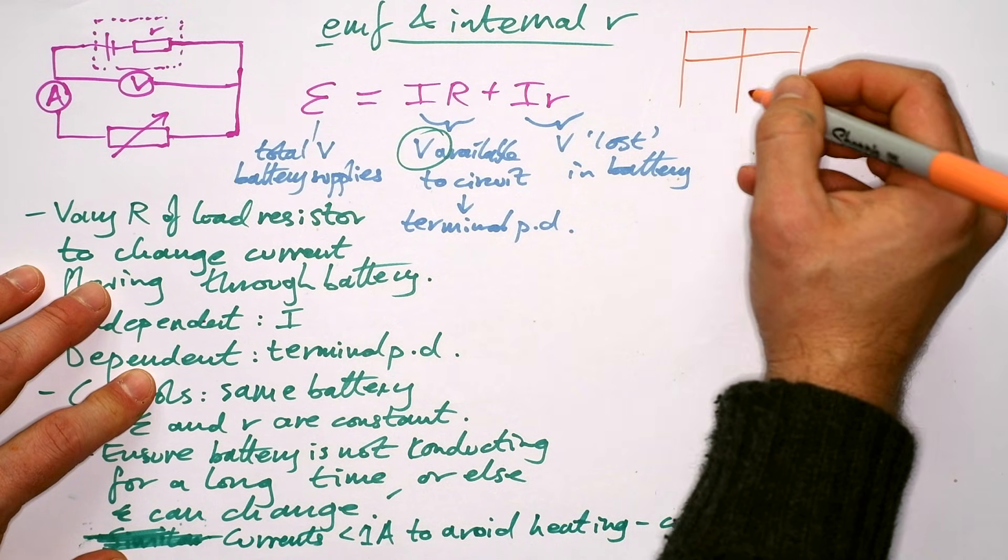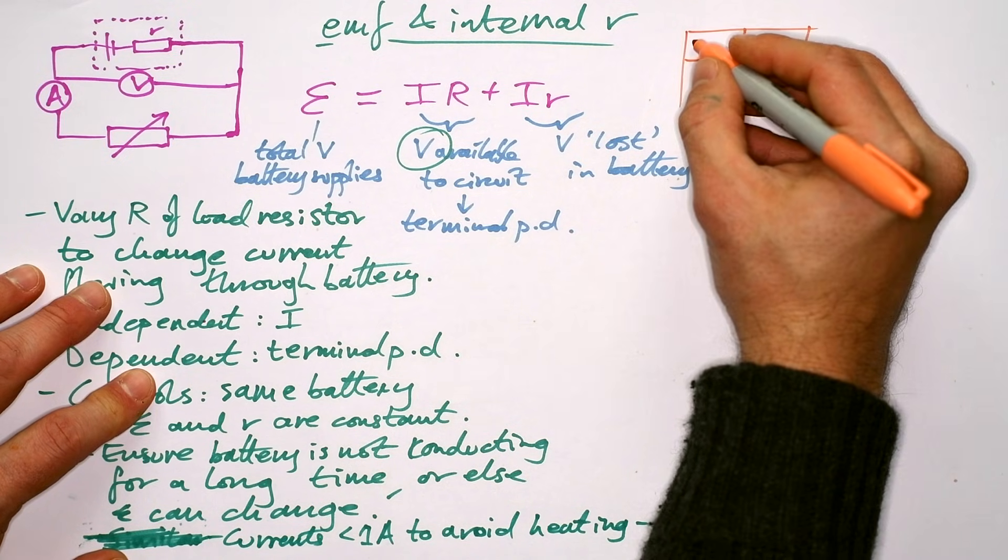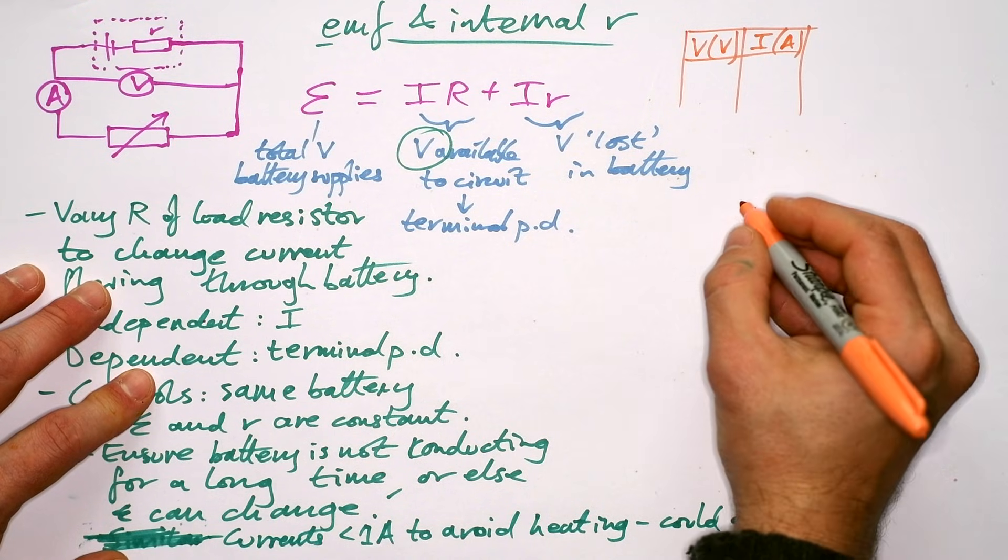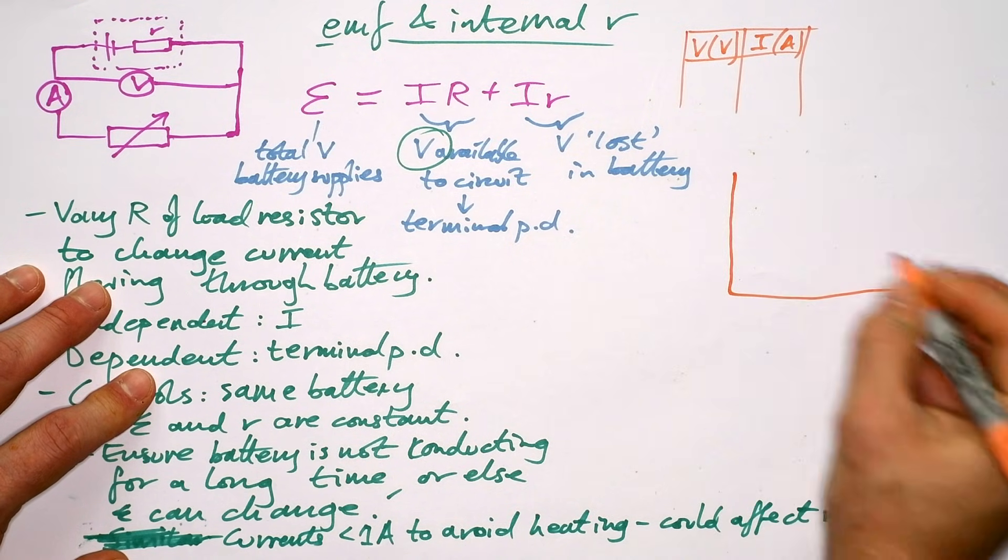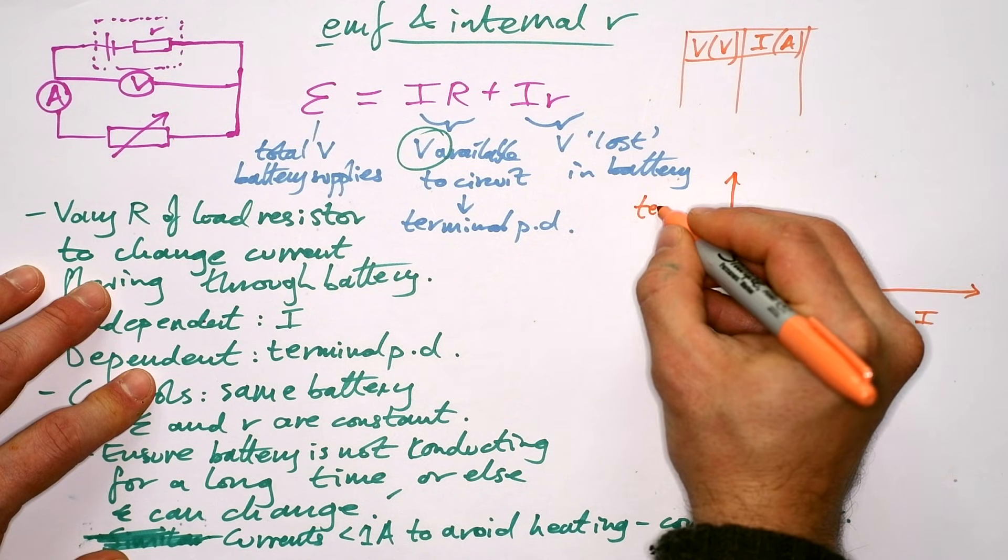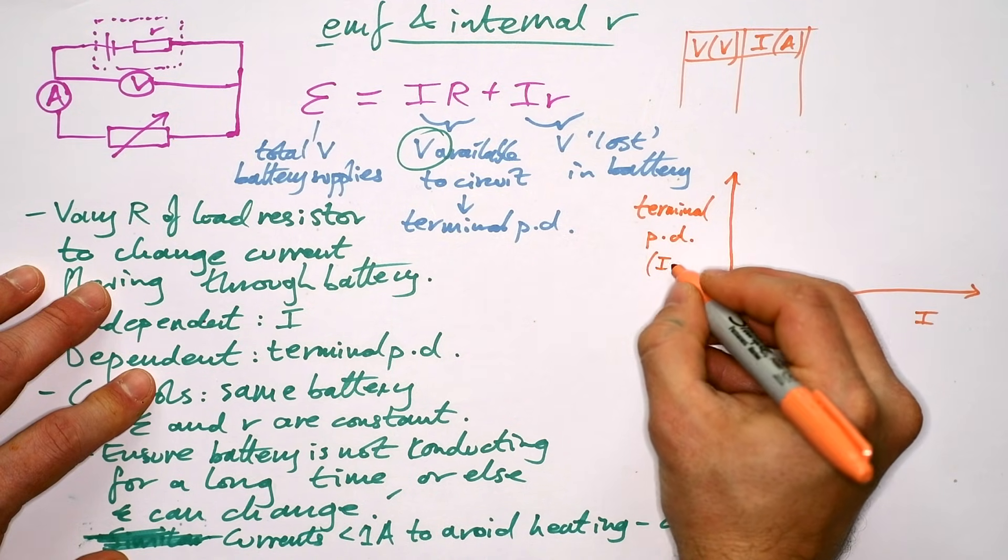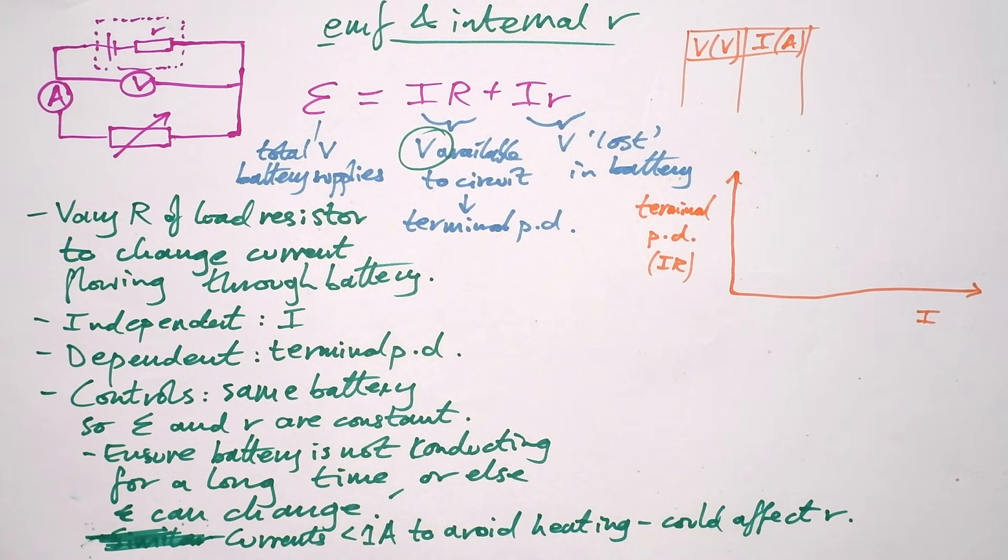You can do repeats. Personally, I don't do repeats. So here's our results table. And we're going to then plot a graph of current against terminal PD. And we know that's equal to I big R, don't we? And this is the only experiment where we don't actually end up with a proportional relationship.